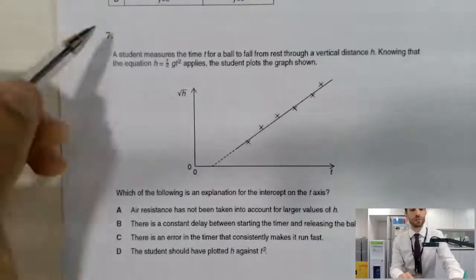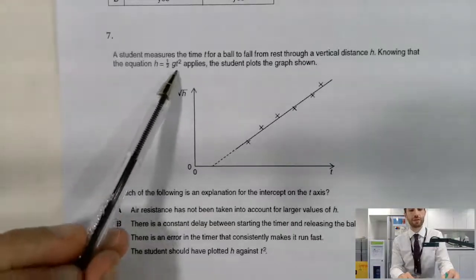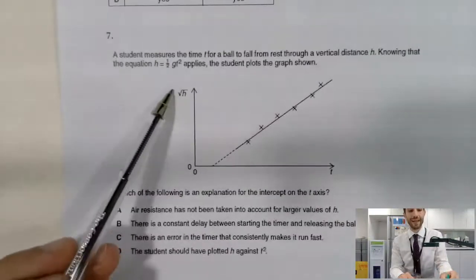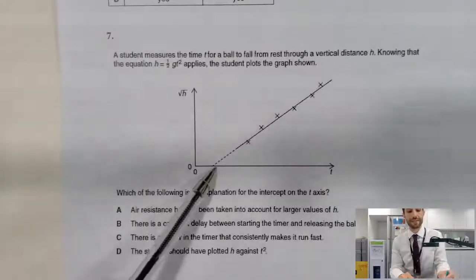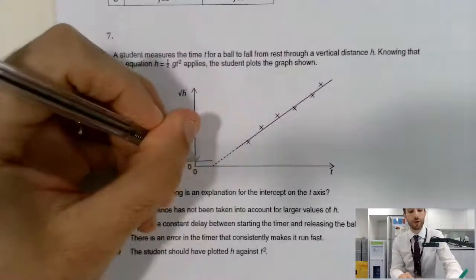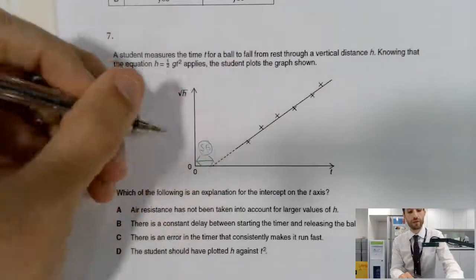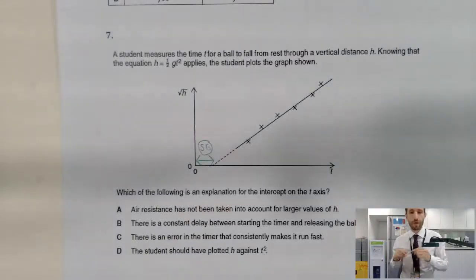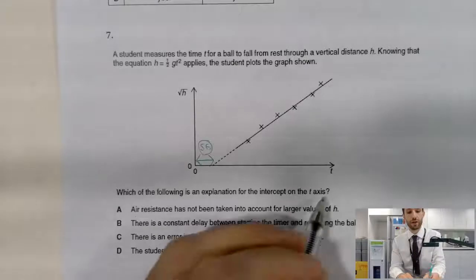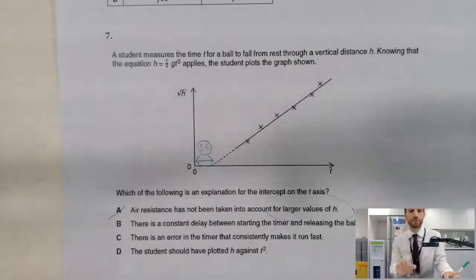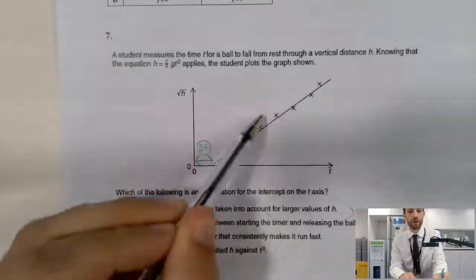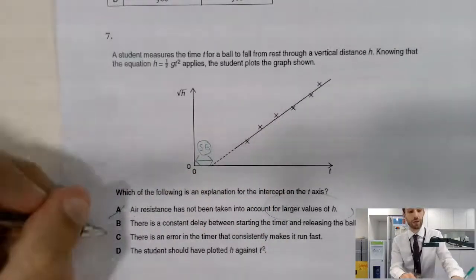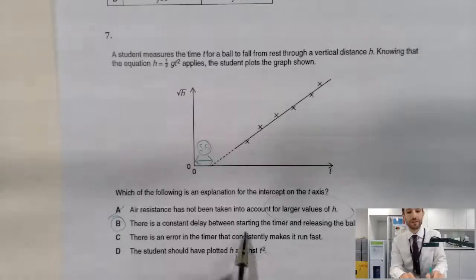Here we go. Question seven. We're expecting h equal to a half gt squared. So if we're plotting any value of h here against any value of t, we are expecting this thing to go through the origin. Therefore, again, there is evidence of some kind of systematic error. And the question is here, what is that systematic error? Remember, a systematic error affects all readings by the same amount. And so therefore, something like air resistance not being taken into account for larger values cannot be valid because that's only for the large values, only for these guys up here, not for these. We're looking for something which will affect everything.